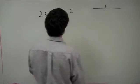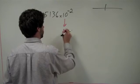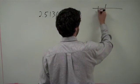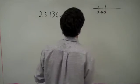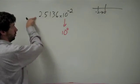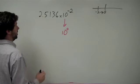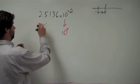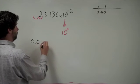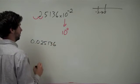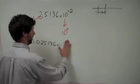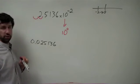We look at our number line. We want to get to decimal notation, which is 10 to the 0. We're currently at negative 2 and want to get to 0. That means we're moving to the right on the number line. Therefore our decimal place is going to move left two places — one, two — and we have 0.025136 times 10 to the 0. But 10 to the 0 is the same as 1, so we can just get rid of it.